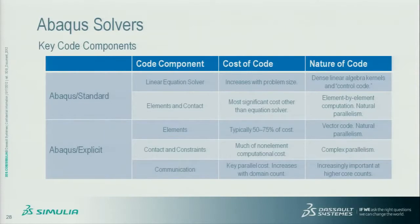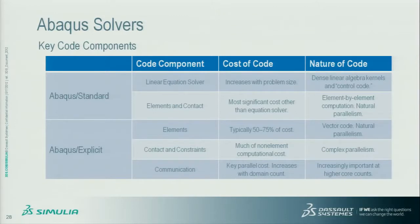The other key component of Standard is the elements and contact — that code is element-by-element computation with very natural parallelism. The key thing for performance in this day and age is essentially where do you get parallelism from and how effectively can you parallelize your code. I bring that up mostly to contrast with Explicit, where elements are also a key cost. Explicit does not have a linear equation solve. One key thing is that the way the Explicit elements are coded is vectorized code — I'll explain that more later.